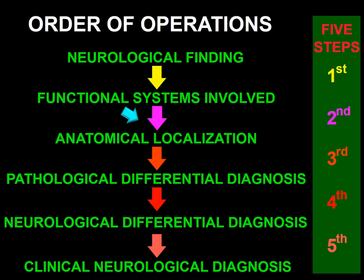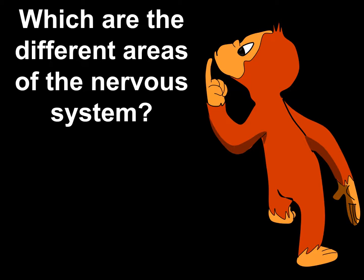Once we have determined the functional system involved, we take the next step: where is the functional system involved? Answering this question should lead us to the anatomical localization — to localize the neurological finding to a specific site within the neurological functional system. Going from the neurological functional system to the anatomical site affected demands that we have a preconceived model of the different areas of the nervous system. I will provide you with a simple way to compartmentalize the nervous system that applies to all neurological functional systems.